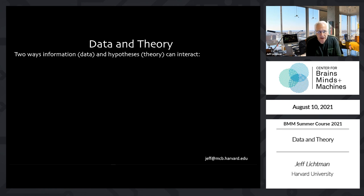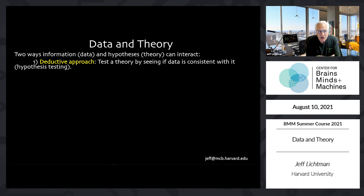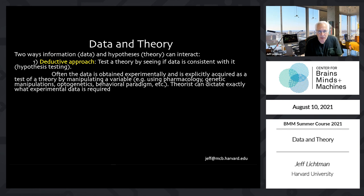Some of you may already know these two ways, but if not, or if you disagree with me or think of another way, don't hesitate to interrupt. The first is something called deduction. The deductive approach is that you have some kind of theory about the way something works, and then you check it by seeing if data, real data in the natural world, is consistent with it. In this sense, you're testing your hypothesis by looking at data. Often, when people use the deductive approach, the data they obtain is explicitly acquired as a test of a theory.